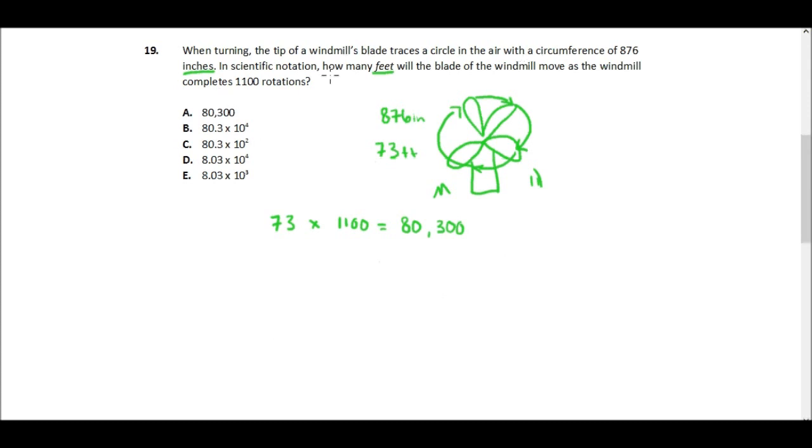But they want our answer in scientific notation, so 80,300 is not our answer, so we can eliminate answer A. Scientific notation is a way that scientists and other people use to communicate large numbers in shorthand.